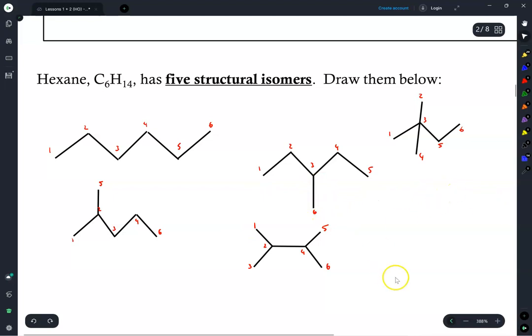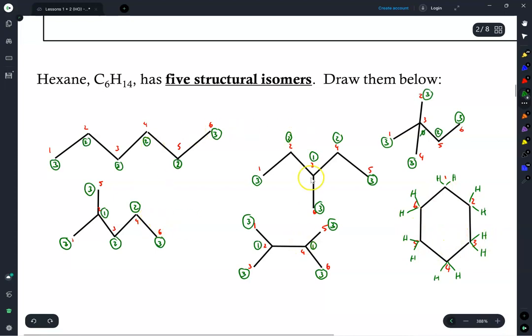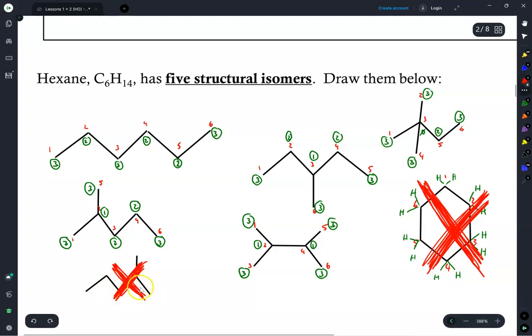Now, some of you may have tried to draw a ring structure like this. And yes, you do have six carbons, but you don't have 14 hydrogens here. There are only 12 hydrogens in this ring structure, whereas every single one of these contains 14 hydrogens. Alright. So just be careful when drawing out these structural isomers. Make sure you have the right number of atoms, C6H14. So this one would not work out. But also make sure you're not just drawing the same structure in a slightly different way, where even though it looks different, it is not different.